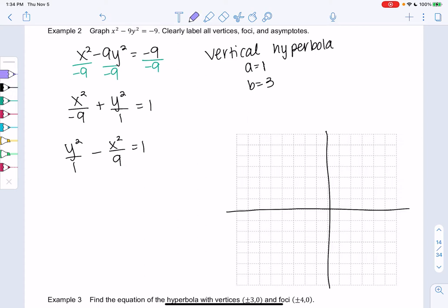So my vertices will be at a. Since it's on the y-axis, it'll look like 0 plus or minus a. So we get 0, 1 and 0, negative 1.